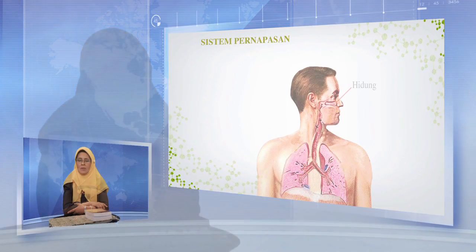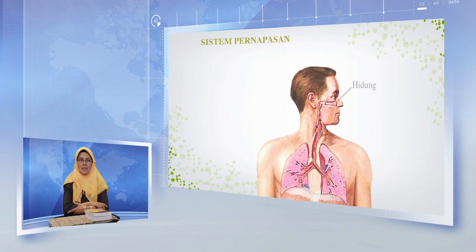Secara umum, sistem pernapasan manusia dimulai dari hidung, yang di dalamnya terdapat rongga hidung, faring dan tonsil, laring, epiglotis, trachea, sampai dengan paru-paru. Untuk lebih jelasnya, perhatikan gambar berikut ini.